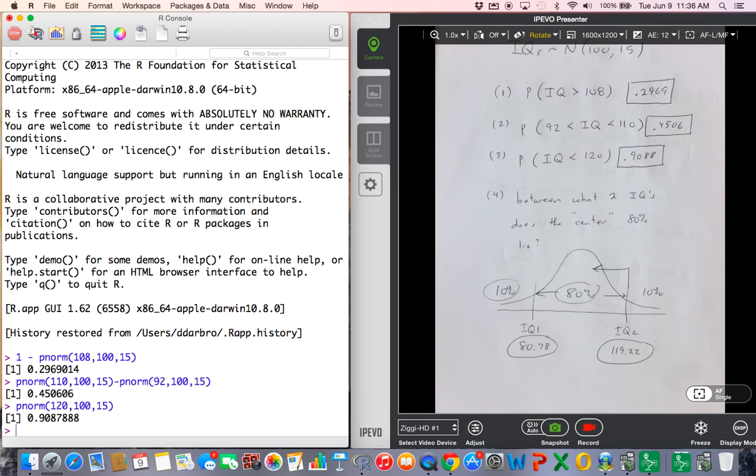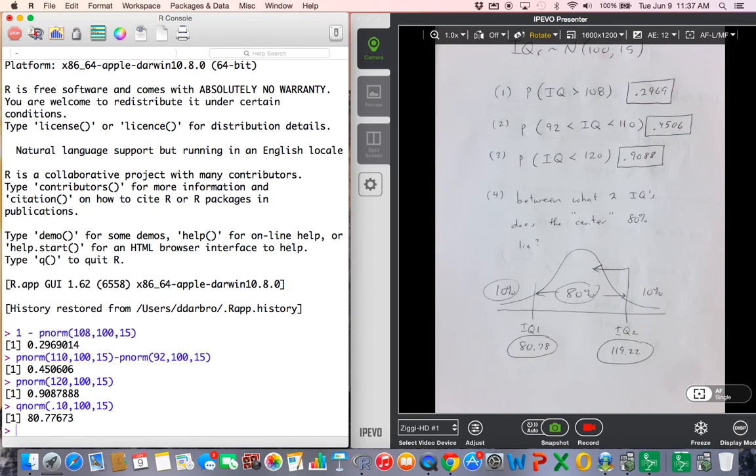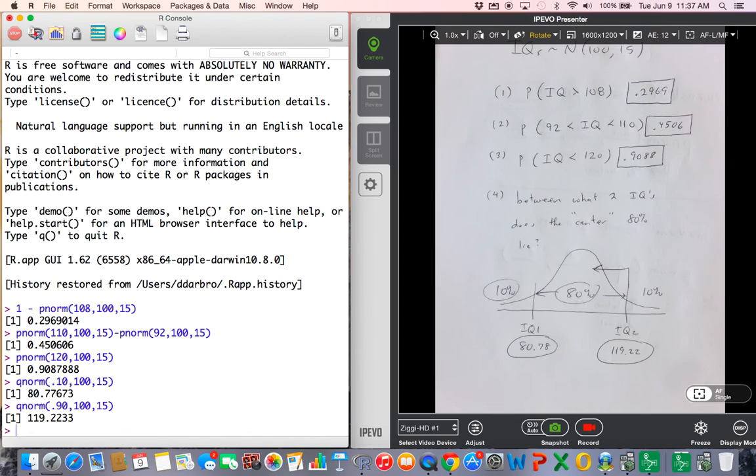Now, the other one, we've already set up the problem between what two IQs does the center 80% fall. Guys, this is, again, just like the graphing calculator Q norm, just percent below so we'll find the left bound at 80.78. And I'll show you a feature. If you hit your up arrow, it will go up and bring the previous command down so all we need to do there is just change about ready to sneeze, 0.90 and, of course, you're going to get your 119.22. So take a screenshot of this. This encompasses compared to these problems, how you can do these problems on R.